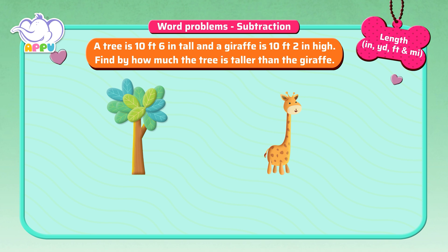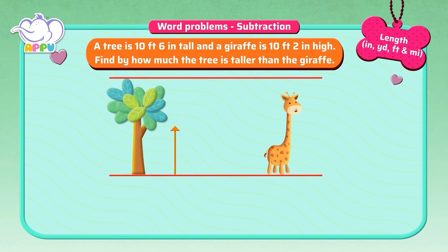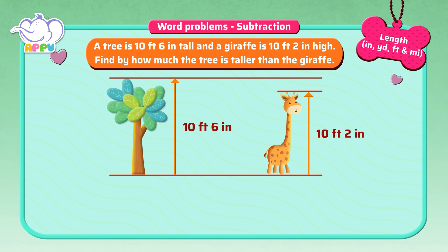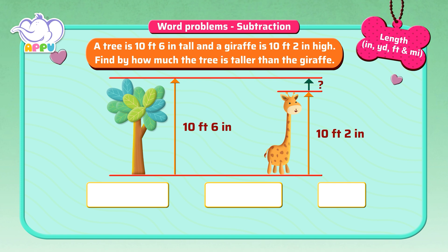A tree is 10 feet 6 inches tall, and a giraffe is 10 feet 2 inches high. Find by how much the tree is taller than the giraffe. To find which is taller, we subtract each of their lengths. 10 feet 6 inches minus 10 feet 2 inches is equal to 1 inch.